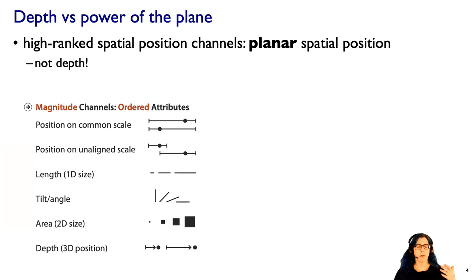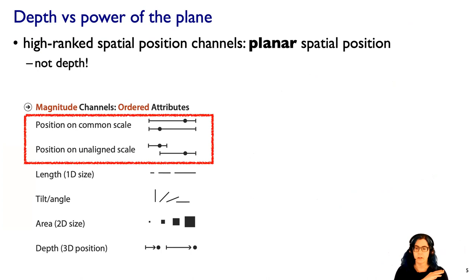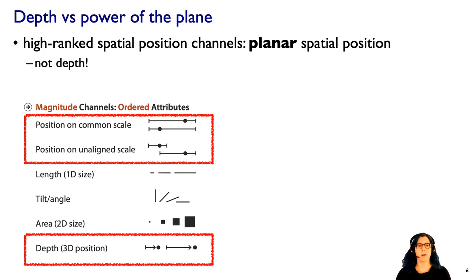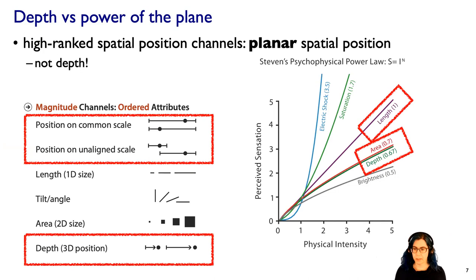A key fact to remember is that when we talk about spatial position being a highly accurate visual channel, that only means planar spatial position — the position on a two-dimensional image plane directly head-on to what you're seeing. It doesn't mean depth. Aligned or unaligned position on a common scale does not mean three-dimensional depth into the scene. From psychophysical curves on sensory response, the exponent of .67 for depth is a much more compressed response than the linear response we get for length.